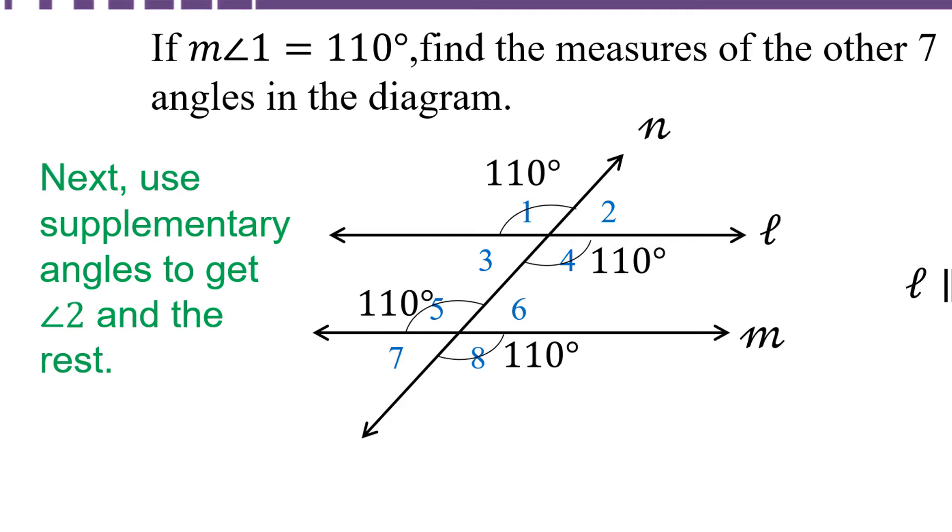Next we're going to use the idea of supplementary angles to get angle 2. Angle 1 and angle 2 together add up to 180 degrees or are supplementary to each other. So that must mean that angle 2 is 180 minus 110 or 70 degrees. But automatically then we know that angle 3 is 70 degrees because it's vertical to angle 2, angle 6 is 70 degrees because it corresponds to angle 2, and angle 7 is 70 degrees because it corresponds to angle 3.